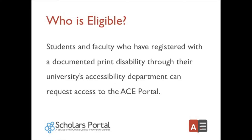Who is eligible? User eligibility is verified at your own institution to ensure that you meet the required criteria for accessible text accommodation. User identity is protected by a unique login known as the token, which is a password comprised of a series of numbers and letters. These tokens can be obtained from accessibility staff at your school, along with the repository URL and any additional support you may need to help you learn about this new service.